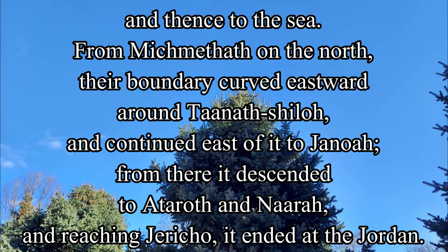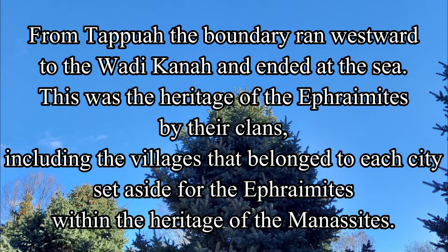From there it descended to Ataroth and Naara, and reaching Jericho, it ended at the Jordan. From Tepua, the boundary ran westward to the Wadi Kana, and ended at the sea. This was the heritage of the Ephraimites by their clans, including the villages that belonged to each city set aside for the Ephraimites within the heritage of the Manassites.